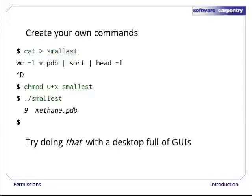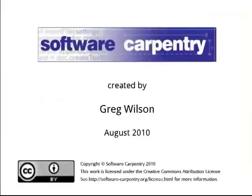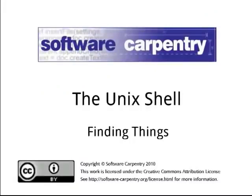And now let's run smallest by typing in its name just as we would type in the name of any other program. To be sure we're getting exactly the file we just created, we type ./smallest to tell the shell that we want the smallest that's in the current working directory. This guarantees that even if there's another program called smallest somewhere else on the computer, the shell will run ours. Sure enough, if we're in the directory containing our PDB files, our little program's output is exactly what we'd get if we ran that pipeline ourselves. Try doing that with a bunch of GUIs on your desktop.